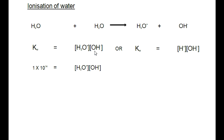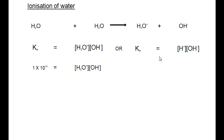The Kc expression for water simplifies to Kc = [H3O+][OH-]. Because we are specifically talking about water, we don't say Kc — we say Kw. So Kw = [H3O+][OH-]. Sometimes it is also written as Kw = [H+][OH-], since H3O+ and H+ are both acceptable — but check your data sheet to avoid errors.